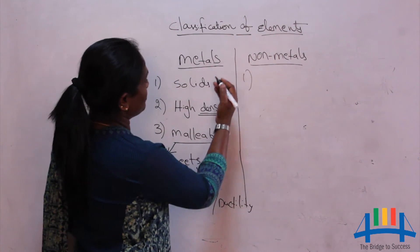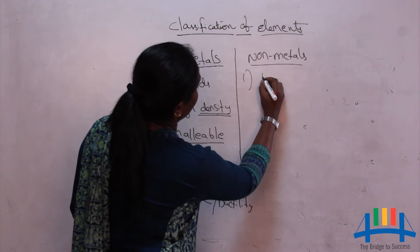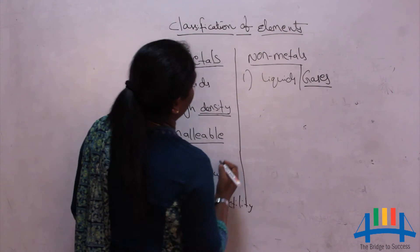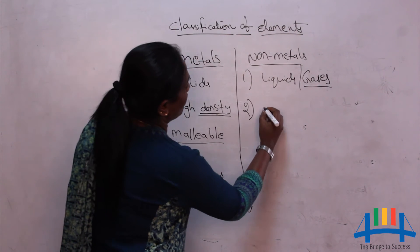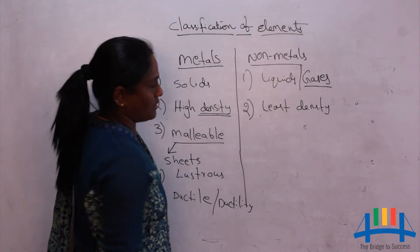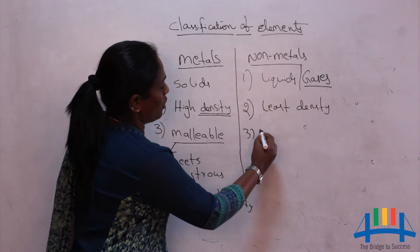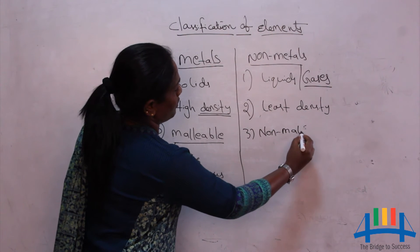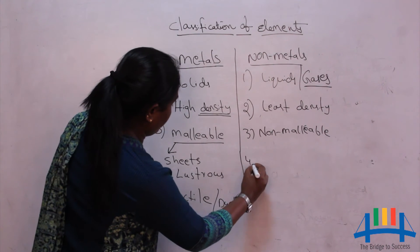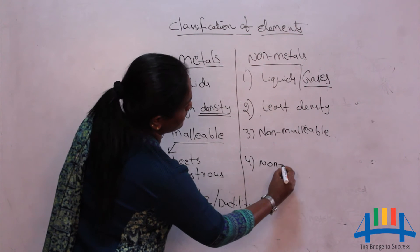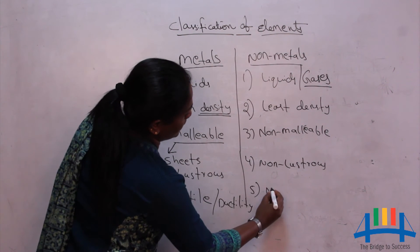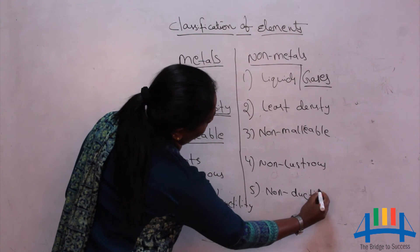Non-metals are exactly opposite to metals. The maximum number of non-metals are liquids or gases. They have the least density. Non-metals are non-malleable — exactly opposite to the property of metals. Non-metals are also non-lustrous and non-ductile.